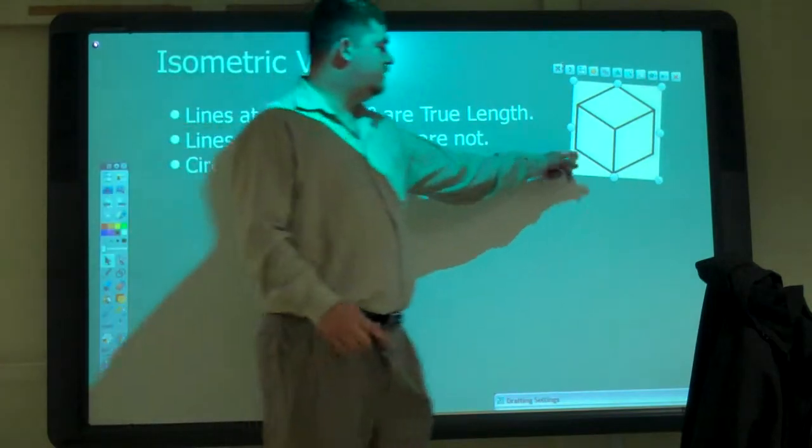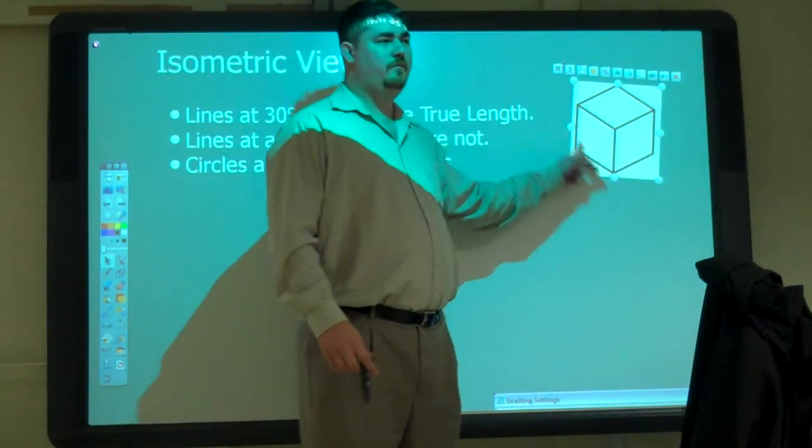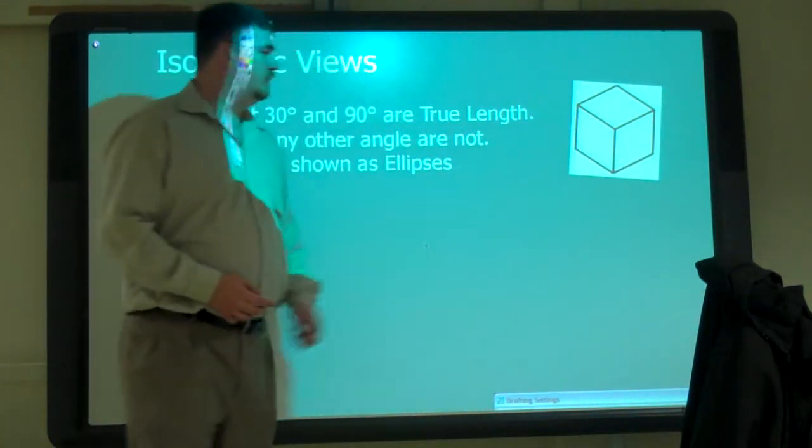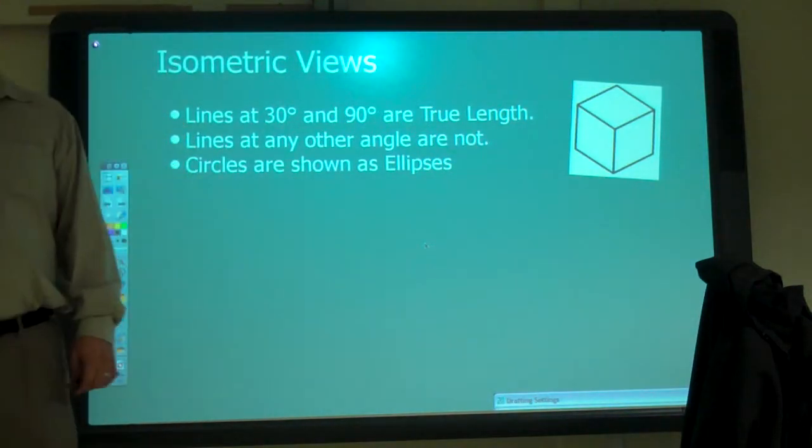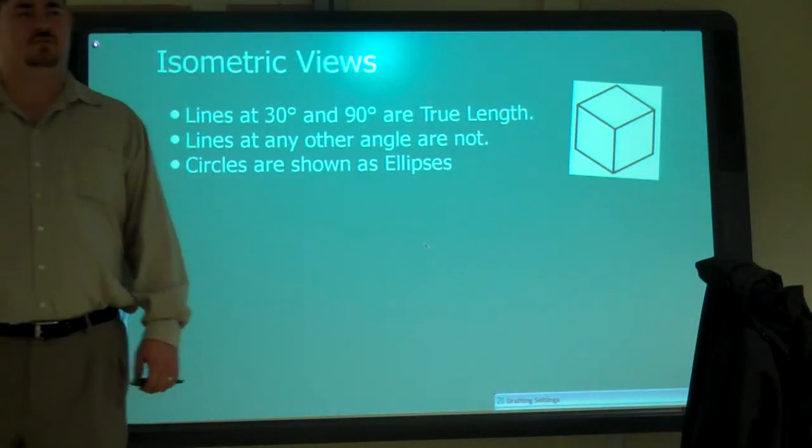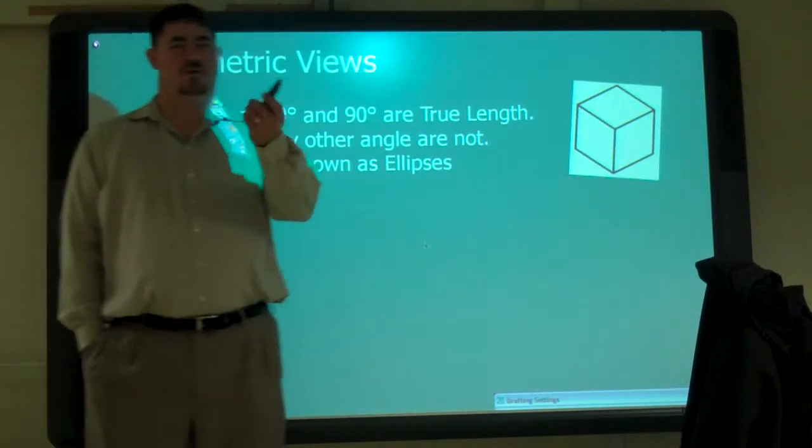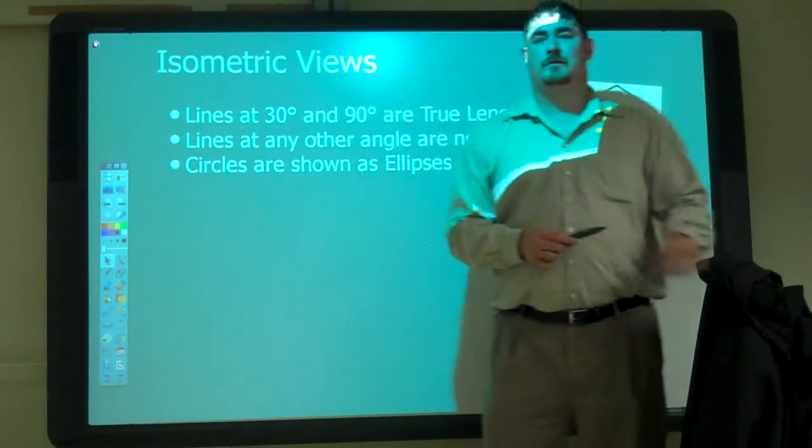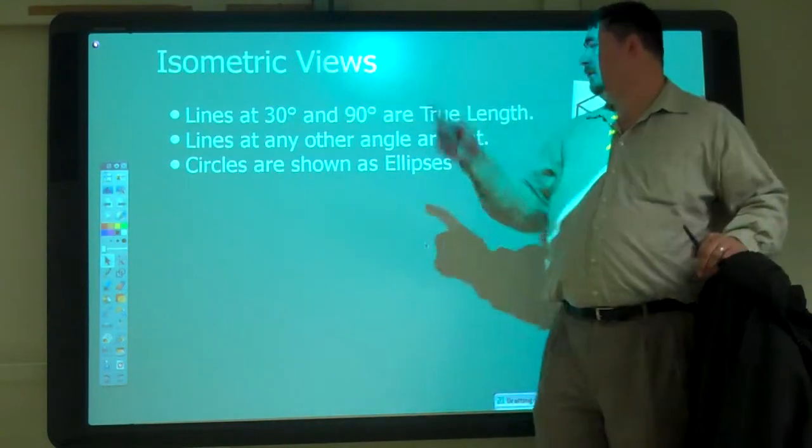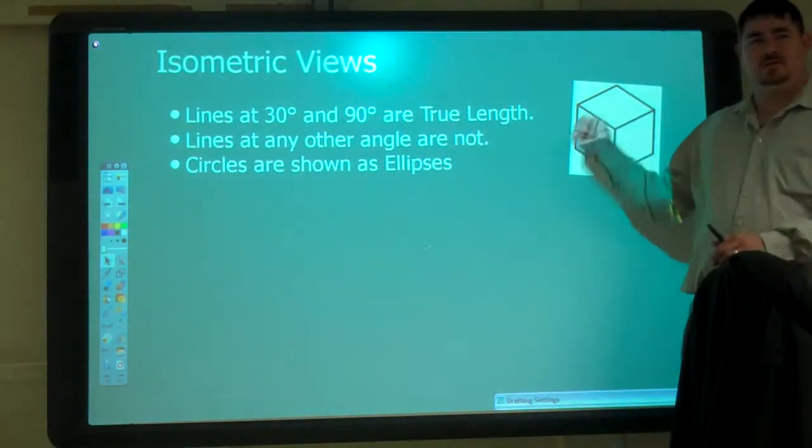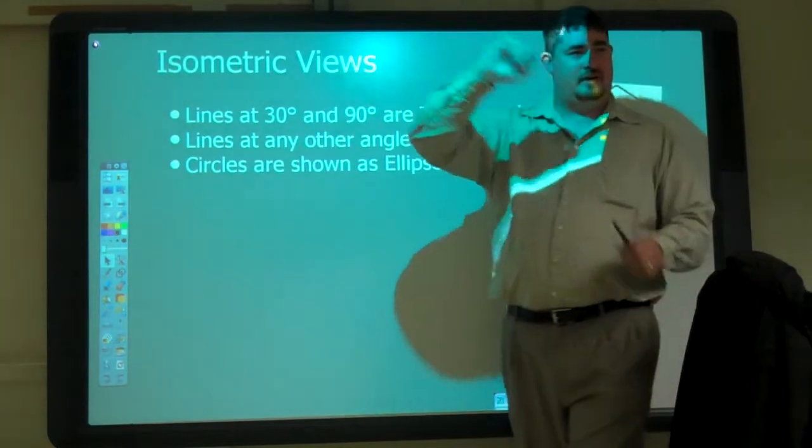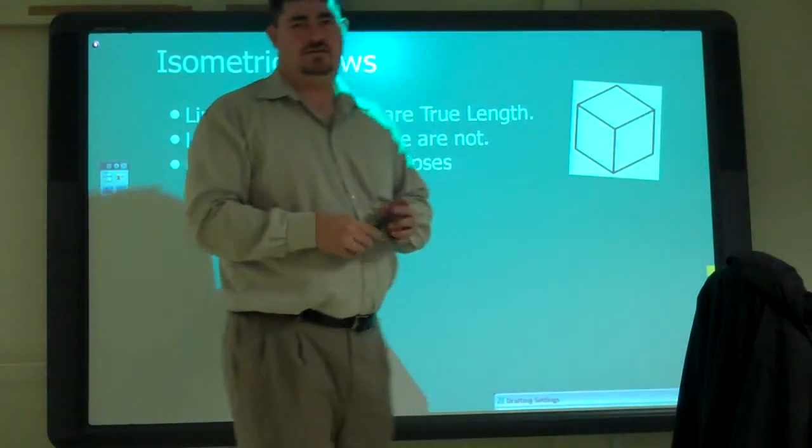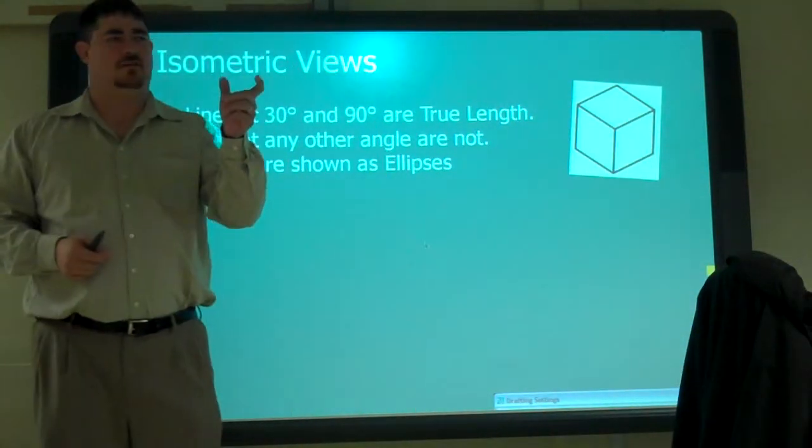These lines here are at thirty degrees. So what's a good way to draw those thirty degree lines in AutoCAD? Set your polar tracking to thirty? Yeah, so you set polar tracking to thirty degrees, right? Then you can draw right on those thirty degree lines, it's no problem. And it also snaps to ninety, draw straight up. So anything that's on one of those angles is true length. So we just draw out the real length. Okay?